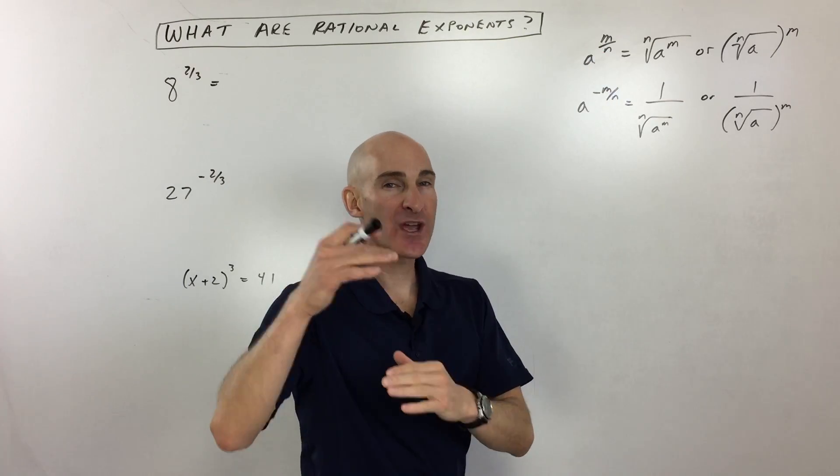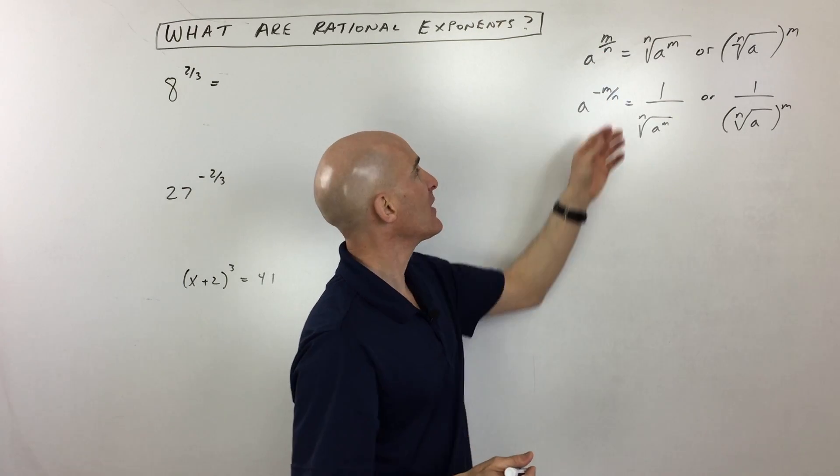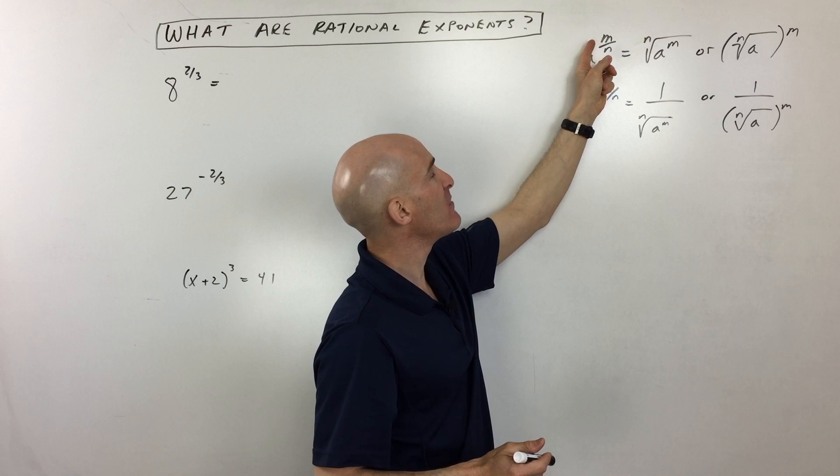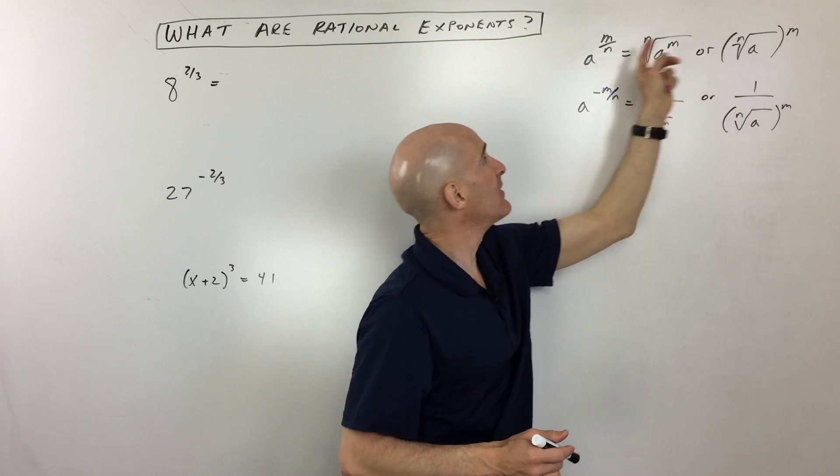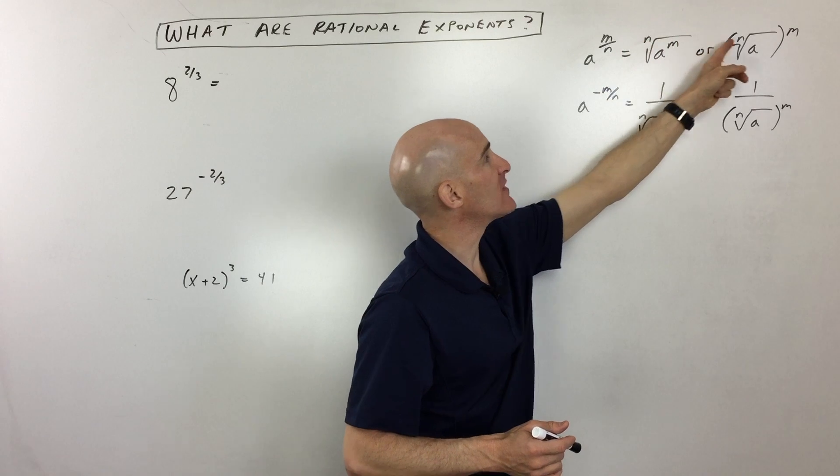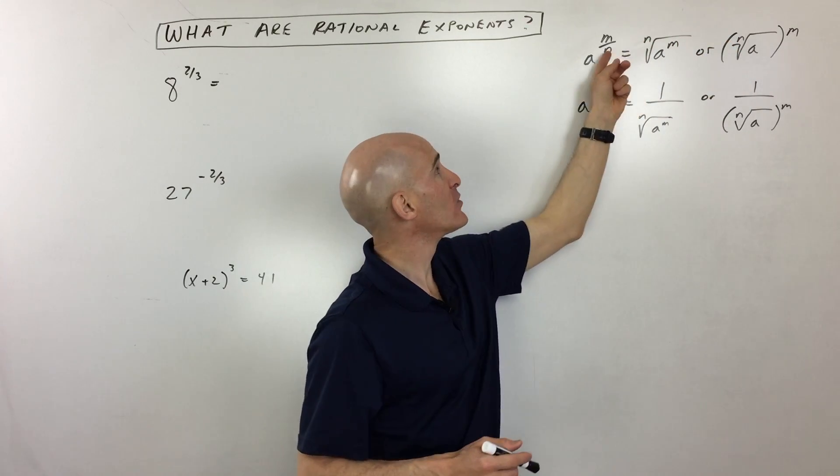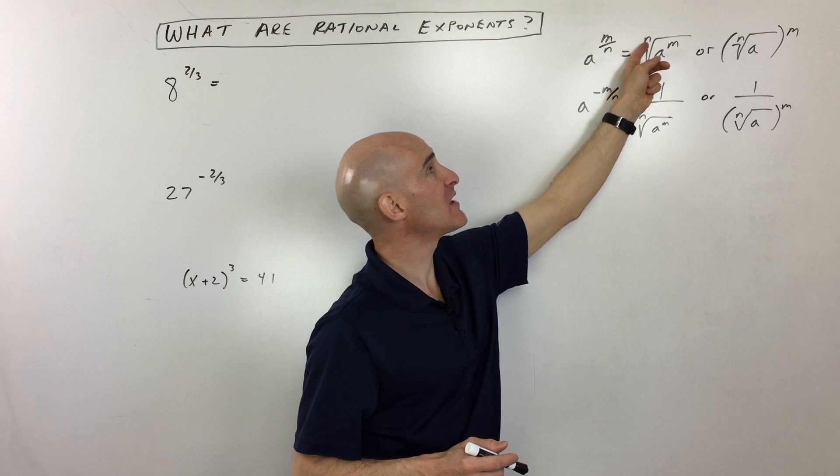Rational exponents. Rational just means ratio, like a fractional exponent, right? But they call them rational exponents. The main thing is that the numerator is the power, and the denominator is the root. That's the index here. So if n was 2, that would be the square root. If n is 3, that would be the cube root.